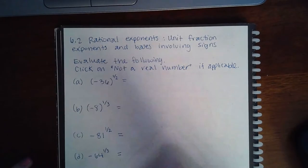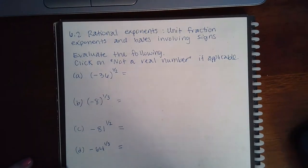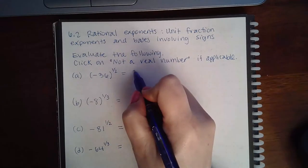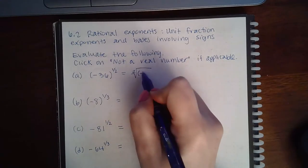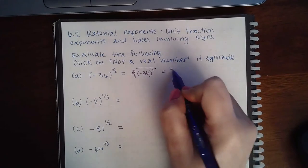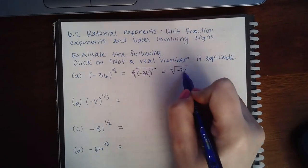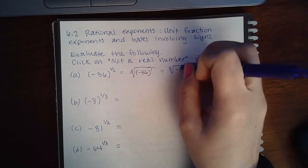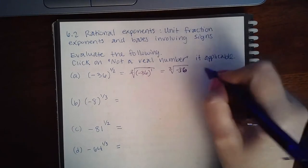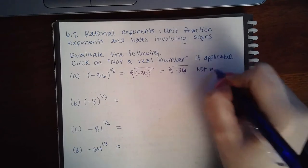The first thing we want to do is change these into their root forms. So I'm going to have 2 as an index and then negative 36 to the power of 1, which is going to be the square root of just negative 36. And we know that we cannot take the square root of a negative number—that is not a real number.